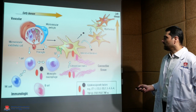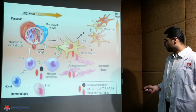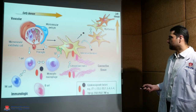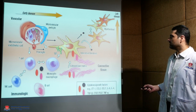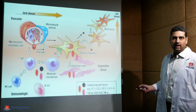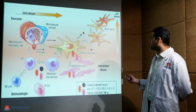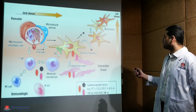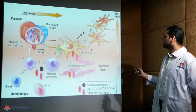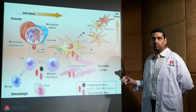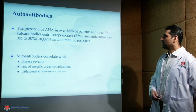T cells further secrete various cytokines like transforming growth factor beta and platelet-derived growth factors, which stimulate the interstitial fibroblasts and myofibroblasts later in the disease to produce fibrosis.